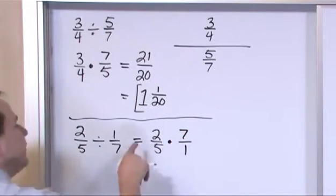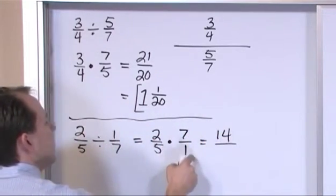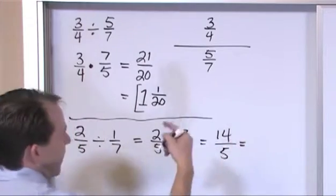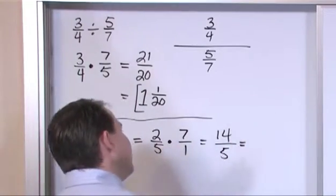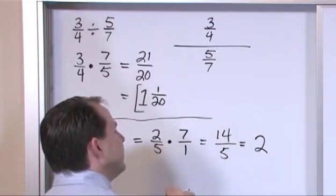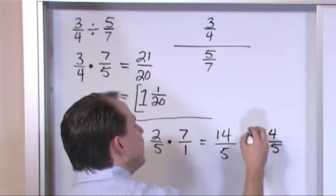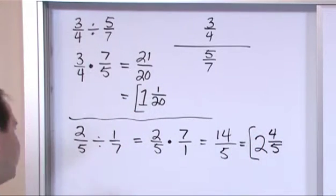And so we just proceed as normal. 2 times 7 is 14, 5 times 1 is 5, but this is improper, so we'll divide it back out again. 5 times 2 is 10, 5 times 3 is 15, so it can only go 2 times. 5 times 2 is 10. The difference between 14 and 10 is 4. We write it over 5, so 2 and 4 fifths, and that's the answer.